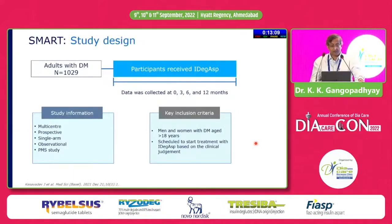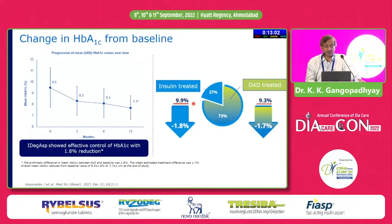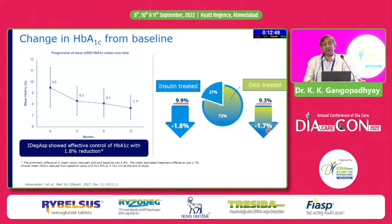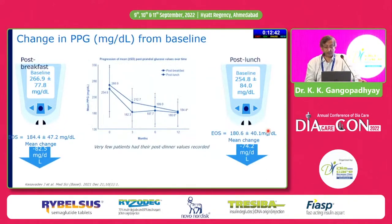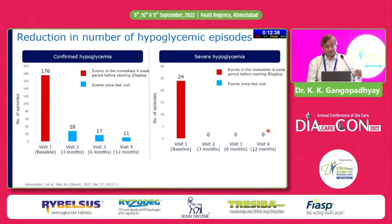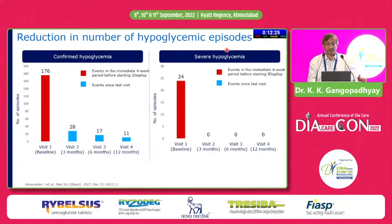The SMART study is another study by Jyotidev. Insulin-treated patients showed about 1.8% HbA1c drop and OAD-treated patients 1.7%. So it didn't matter really if you are on tablets or on insulin — you would expect a similar HbA1c drop with a lower dose and less hypoglycemia. Change in fasting sugar was about 50; change in PP at breakfast was 82; PP at lunch was about 74. Hypoglycemia reduced as time progressed — severe hypoglycemia before starting IDegAsp came down to virtually none at 12 months.